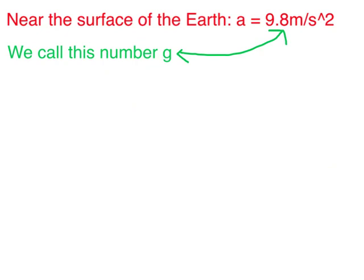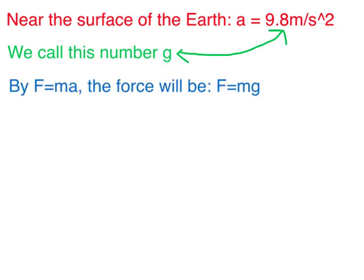Since all objects experience the same acceleration, 9.8 meters per second squared, when dropped near the surface of the Earth, we give this number a special letter. We call it little g. Since all objects experience the same constant acceleration, little g, near the surface of the Earth,